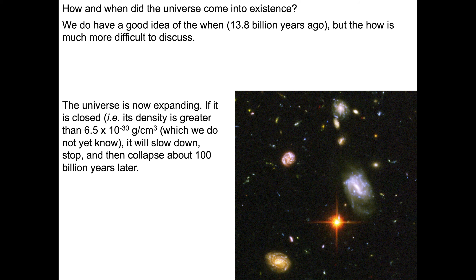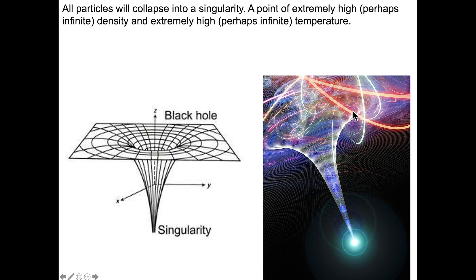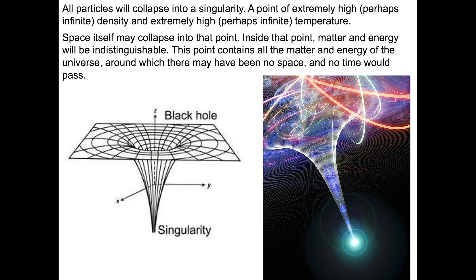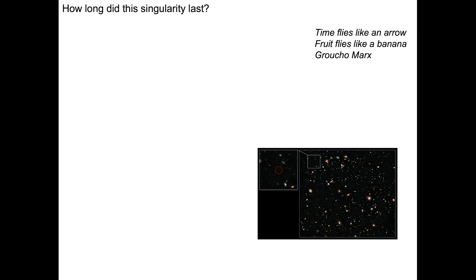When these particles collapse into a singularity, we're talking about a point of extremely high — perhaps infinite — density and extremely high, perhaps infinite temperature. Material enters a black hole and ultimately becomes a singularity. Black holes can potentially come together, and maybe eventually the entire universe will crunch down into one singularity. Space itself collapses at that point, and within it, matter and energy are indistinguishable. The point contains all the matter and energy of the universe, around which there is no space and no time passes.